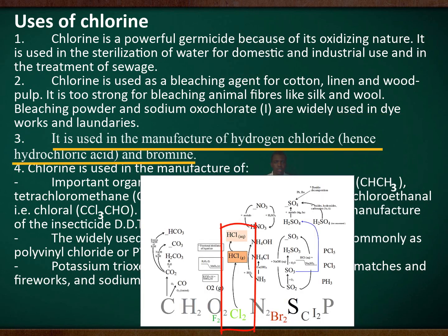Chlorine is used in the manufacture of hydrogen chloride, hence hydrochloric acid, and bromine.